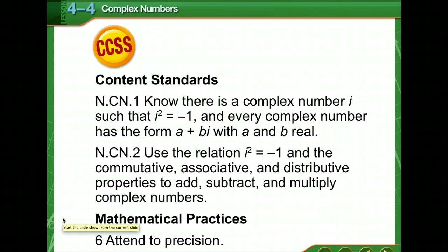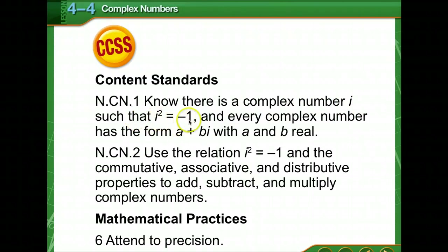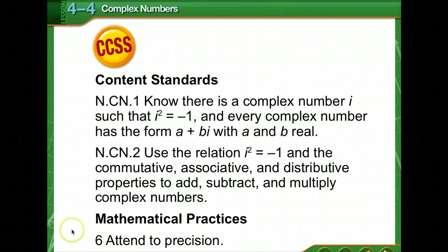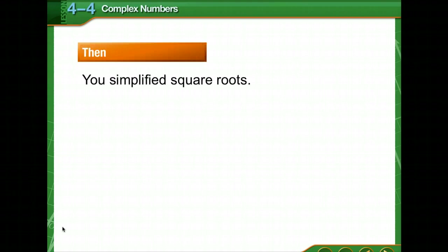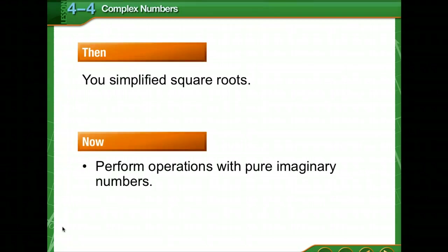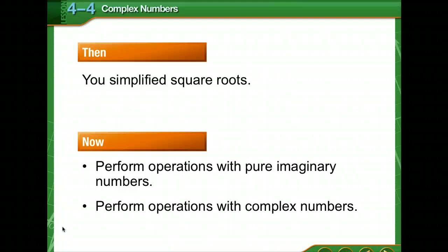Today we're going to be studying about complex numbers. Did you know that there are numbers besides the real number system? We're going to learn about imaginary numbers. There's a complex number i such that i squared is equal to negative 1. The relation i squared equals negative 1 uses the commutative, associative, and distributive properties. Today we're going to be attending to precision in our mathematical practices. Previously you've simplified square roots; now you're going to perform operations with pure imaginary numbers and with complex numbers.